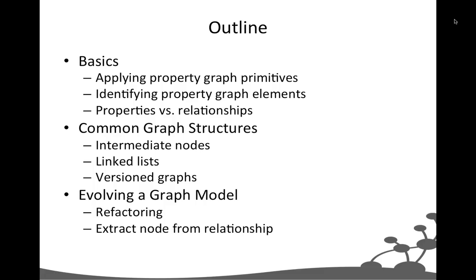So these are the things we're going to be looking at today. I've got three sections. The first is a short introductory section about the basics — how we can apply the property graph primitives: nodes, relationships, properties, and labels in order to develop your own application graph data model. Then we'll talk briefly about how we can identify those elements — a node versus a relationship — from your description of your domain.